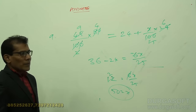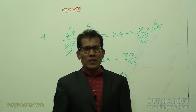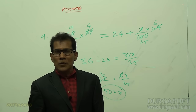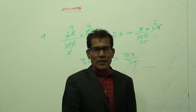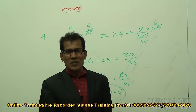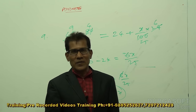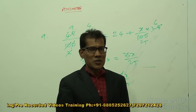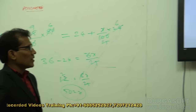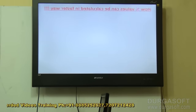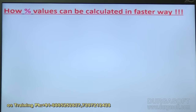While calculating percentage values, we often need to find 10%, 5%, 20%, 21%, 18% and using pen and paper takes lots of time. Without pen and paper, we can calculate percentage values faster than a calculator.